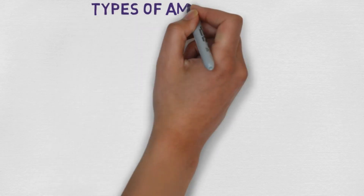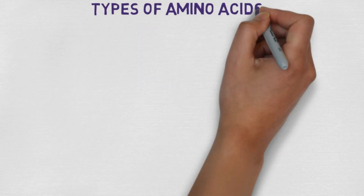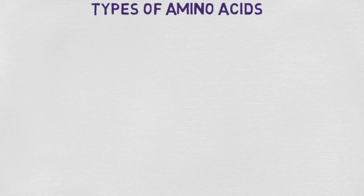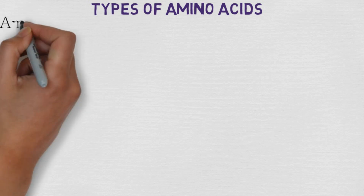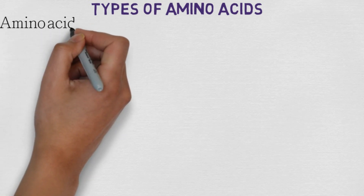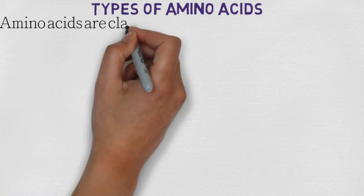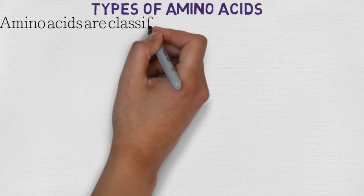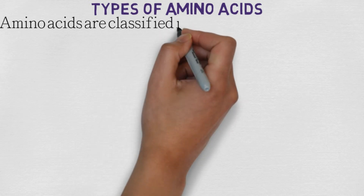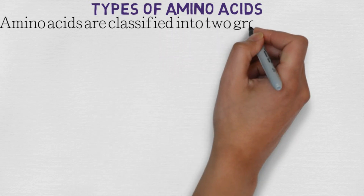Tyrosine is one of the amino acids that we use. Amino acids are classified into two groups.